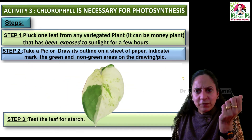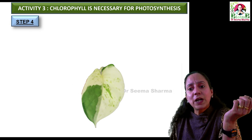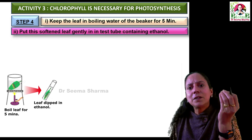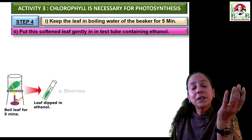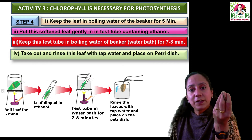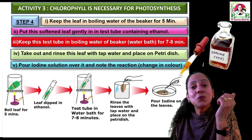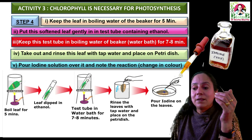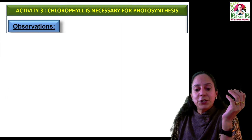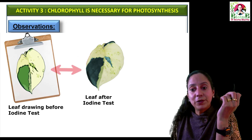Then we subject this variegated leaf to the iodine test using the same procedure as in the first two activities: keeping the leaf in boiling water for five minutes, putting it in a test tube containing ethanol, heating the test tube in a water bath for seven to eight minutes, taking it out and rinsing with water, then spreading it gently on the petri dish. Lastly, pour iodine over it and note the change in color. This is how you are supposed to proceed when you carry out this activity in your science lab. For observation, compare the parts stained blue-black with the drawing or picture which was already taken.